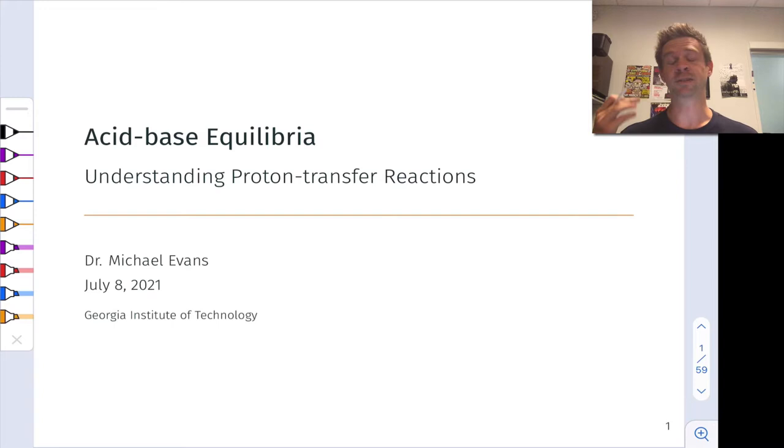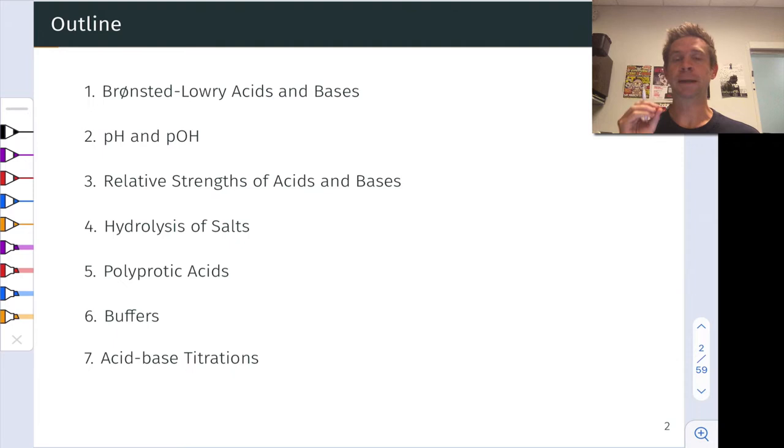Bronsted-Lowry acid-base reactions also tend to be very fast, which means they're a great fit for equilibrium thinking because they come to equilibrium extremely quickly, within milliseconds in most cases. So we're going to get a chance to think a lot about equilibrium on a deeper level and in an important context in this unit. It's got a lot of sections, and there's a lot to cover, but by the time we're done with this, you're going to be a master of chemical equilibrium.